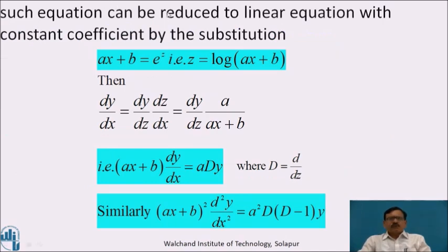Such equations can be reduced to linear equations with constant coefficients by the standard substitution ax + b = e^z, that is z = log(ax + b). Then dy/dx becomes dy/dz · dz/dx. As dz/dx = 1/(ax + b), we can write (ax + b) dy/dx = a · D(y), where D stands for d/dz.